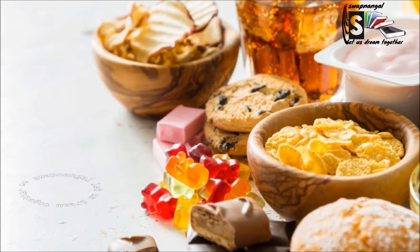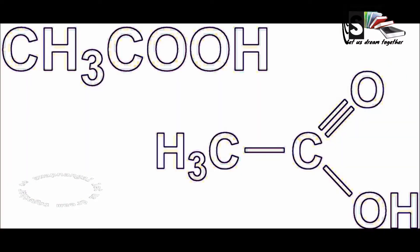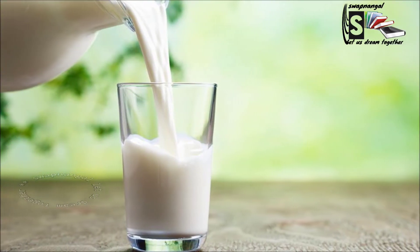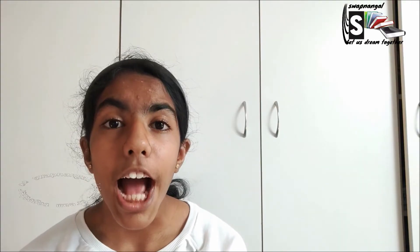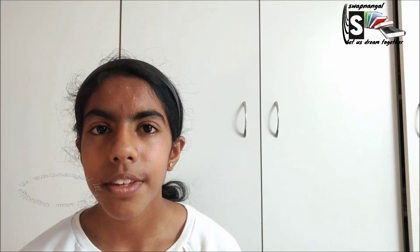Many foods such as vinegar, fruits and sour milk contain acids. Even our stomach produces acids — specifically hydrochloric acid — which helps us to digest our food. Other natural acids include citric acid found in citrus fruit, ethanoic acid found in vinegar, lactic acid found in sour milk, and hydrochloric acid found in our stomach juices. Acids can be either weak or strong.